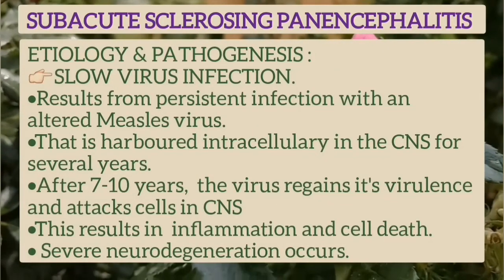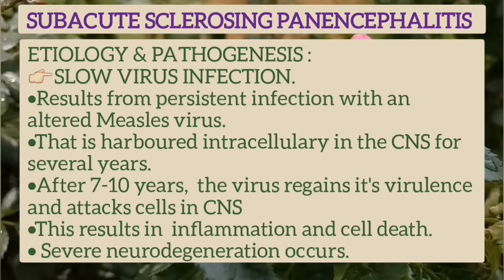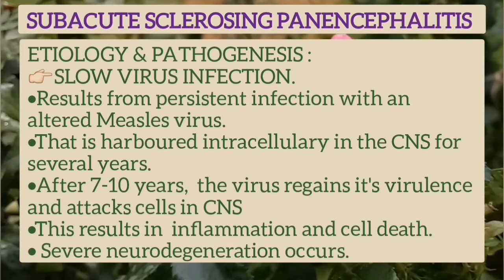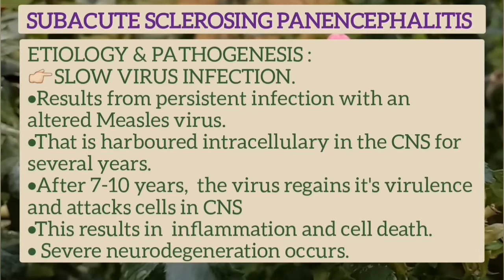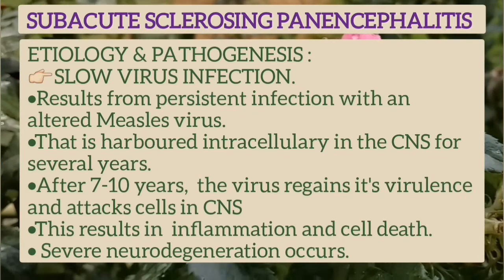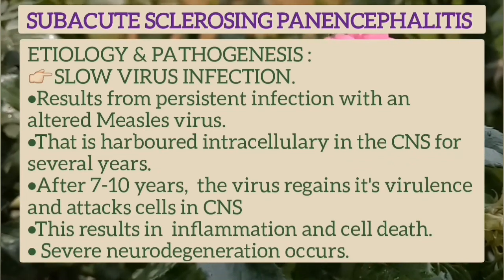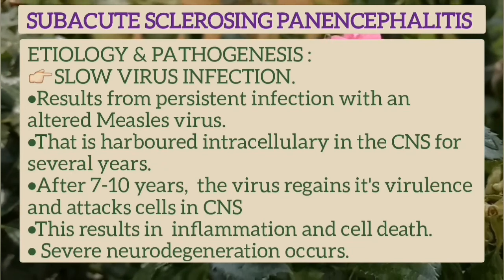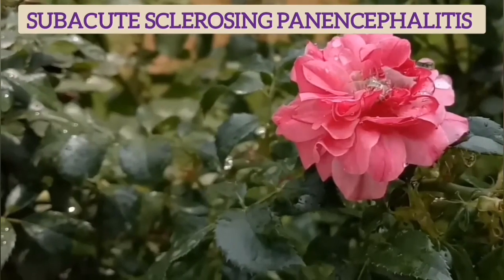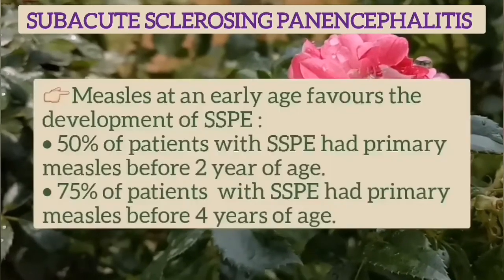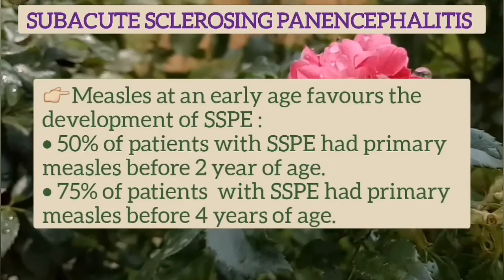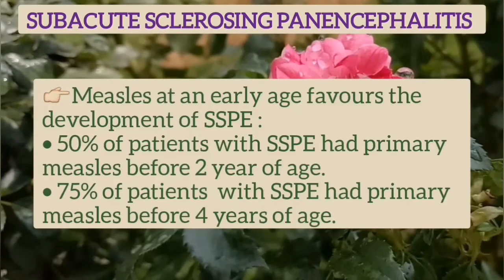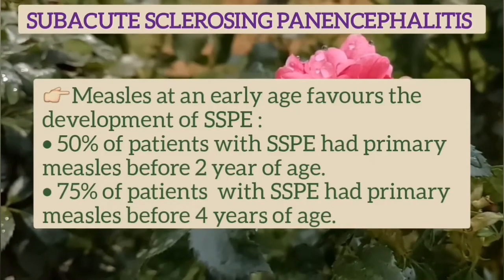Subacute sclerosing panencephalitis (SSPE) is a slow virus infection resulting from persistent infection with an altered measles virus, harbored intracellularly in the nervous system for several years. After about 7 to 10 years, the virus resumes virulence and attacks cells, resulting in inflammation and cell death of the nervous system, followed by a severe neurodegenerative process. Measles at an early age favors this complication: 50% of SSPE patients had primary measles before 2 years of age and 75% before 4 years of age.